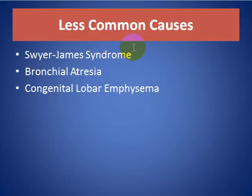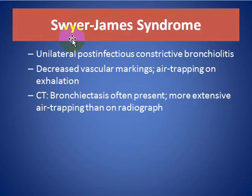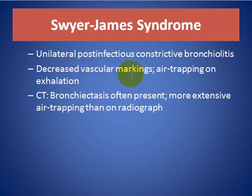Less common causes include Swyer-James syndrome, bronchial atresia, and congenital lobar emphysema. For Swyer-James syndrome, there is unilateral post-infectious constrictive bronchiolitis with decreased vascular markings and air trapping on expiration. CT bronchiolitis is often present with more extensive air trapping than seen on the radiograph.